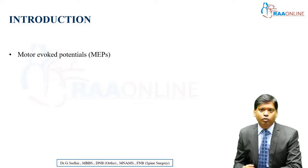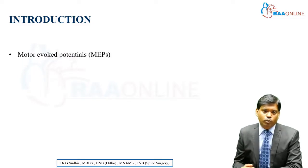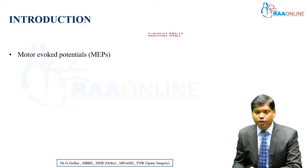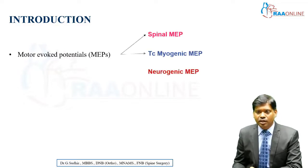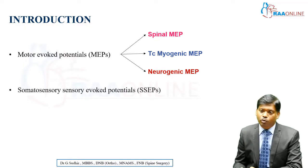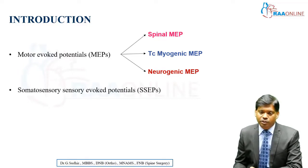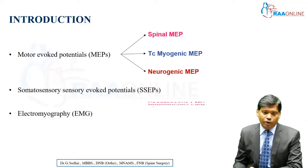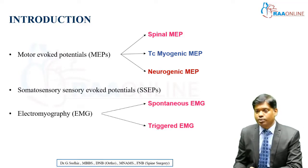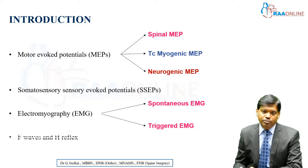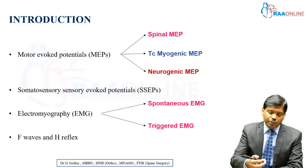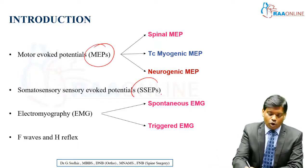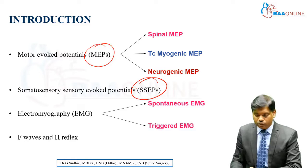What are the types of neuromonitoring? The first is motor evoked potentials, which can be spinal, transcranial, or neurogenic. There are also somatosensory evoked potentials, commonly called SSEPs. Additionally, electromyography — either spontaneous EMG or triggered EMG — and F waves and H reflex are used. Of these, MEPs and SSEPs are the most commonly used during surgeries.